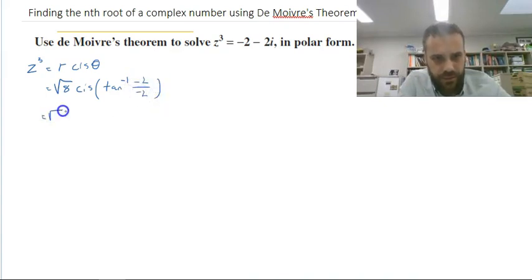Alright, so that's going to be root 8, cis, shift tan of 1. We end up with root 8, cis, pi on 4.